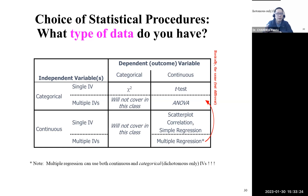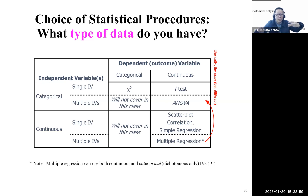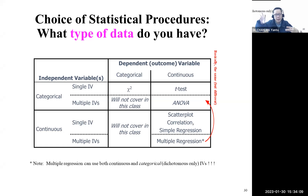If you have multiple independent variables — for example, trying to predict happiness measured on a continuous index — and your predictors include years of education, income, and how much exercise they do per week, those are all continuous variables. If you have three independent variables all on continuous scales predicting a continuous health outcome, you can use multiple regression because you have multiple independent variables and a continuous dependent variable.